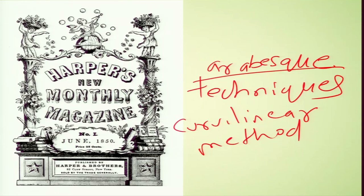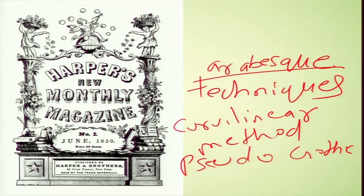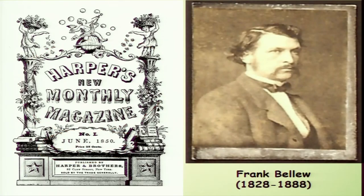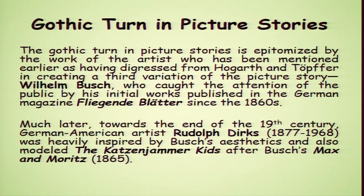The arabesque technique led to a pseudo-gothic style that worked particularly well in conjunction with versification and folk tales, and was a formidable rival to the Topfferian form of picture stories. The first general monthly magazine, Harper's New Monthly Magazine, launched in 1850, alternated between gothic and Topfferian picture stories, with artists like Frank Velo attempting new variations between the two. This gothic turn in picture stories is epitomized by the work of the artist who digressed from Hogarth and Topffer to create a third variation of the picture story.